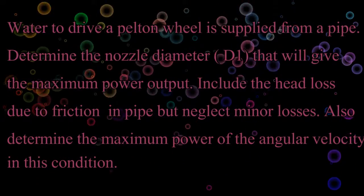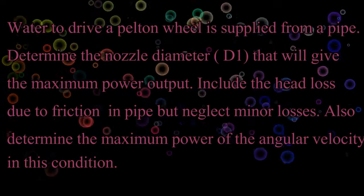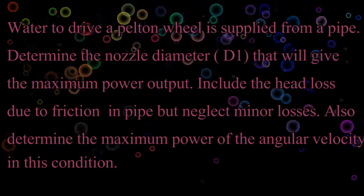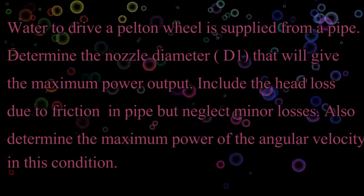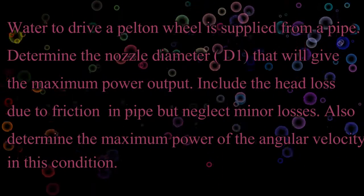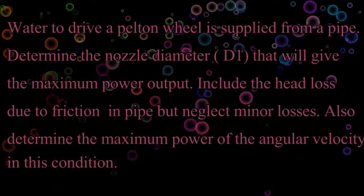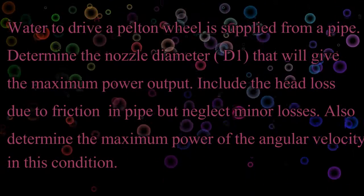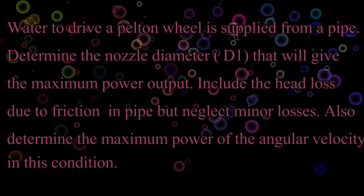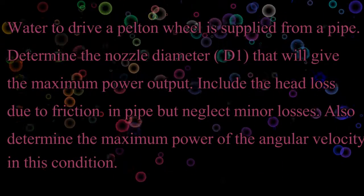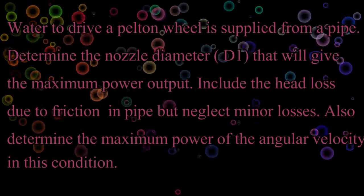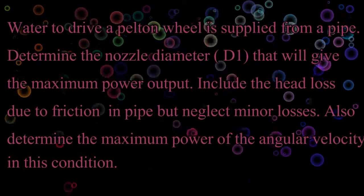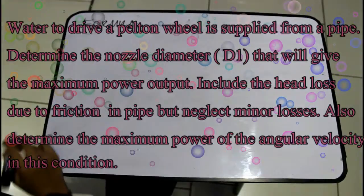Now let us solve one problem on turbines. The given problem: water to drive a Pelton wheel is supplied from a pipe from a lake, as indicated in figure E12.68. Determine the nozzle diameter D1 that will give the maximum power output. Include the head loss due to friction in the pipe but neglect minor losses. Also determine the maximum power and the angular velocity of the rotor at this condition.